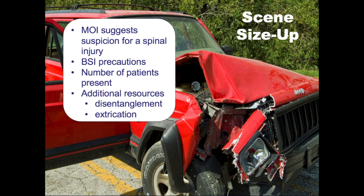When you are arriving on scene, you go through your normal algorithm and think about the mechanism of injury during your scene size-up. This is incredibly important because oftentimes it's the mechanism that gives you the first clue that the patient could have a spinal injury. Always take your BSI precautions, think about how many patients you have on scene, and decide if you need additional resources — especially for motor vehicle accidents if you need an extrication due to damage to the vehicle.